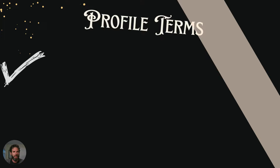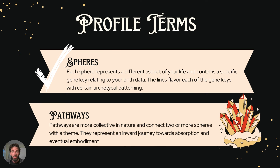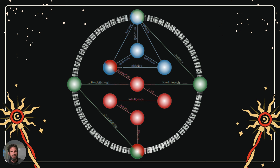Now let's talk about the pathways, of which there are 12. Pathways are more collective in nature, and they connect two or more spheres together with a theme. They represent an inward journey towards absorption and eventual embodiment — enlightenment or awakening. The pathways are an inner journey where we travel back to our source. That's why it's called the golden path. And once we get back to that source, we come and bring that wisdom back out into the world again.